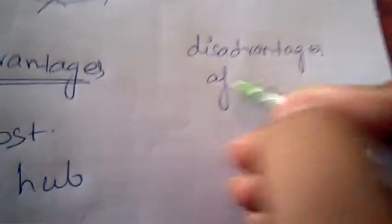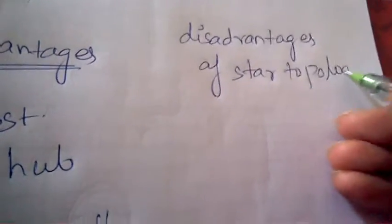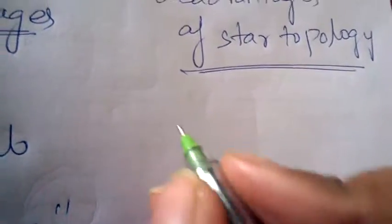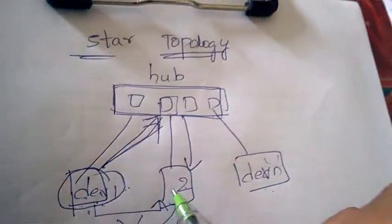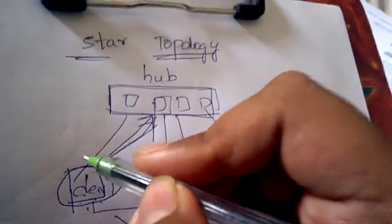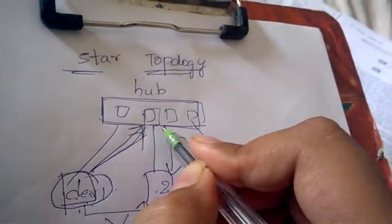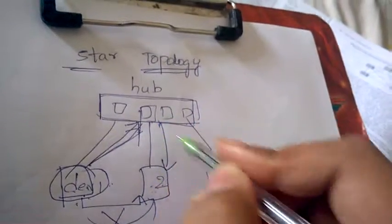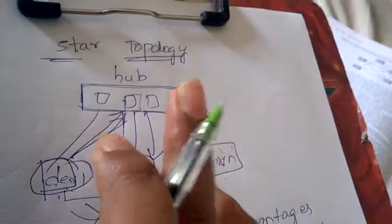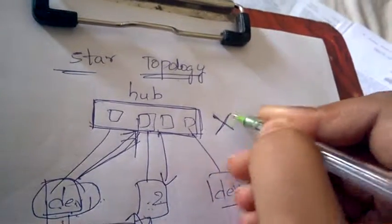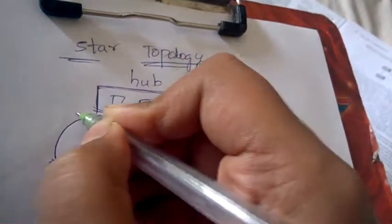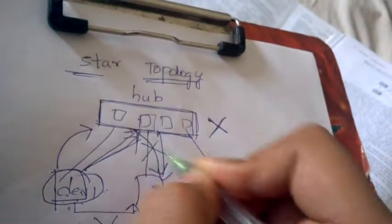Now let us see the disadvantages of star topology. The first disadvantage is dependency. We already know that if device one wants to transfer information to device two or any other device, it must first transfer the information to the hub, and the hub takes responsibility for sending it to the final destination. However, if the hub fails or has any problem, even though a device transfers information to the hub, the hub cannot send it to the destination.